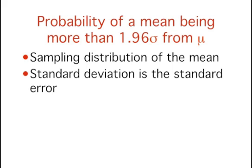Recall that the standard deviation of the sampling distribution of the mean is called the standard error of the mean. Therefore, the probability that a sample mean is more than 1.96 standard errors from the population mean is 0.05.